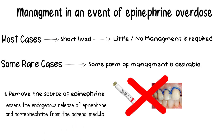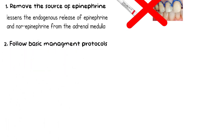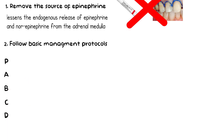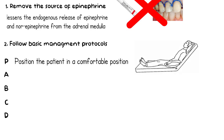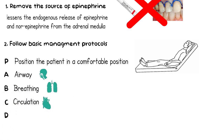After eliminating the source, basic management protocols should be followed — P, A, B, C, and D. Position the patient in a semi-comfortable position; a semi-supine or erect position minimizes any further elevation in cerebral blood pressure. The A, B, C protocol is then assessed: whether the patient is conscious, talking, breathing properly, and so on.